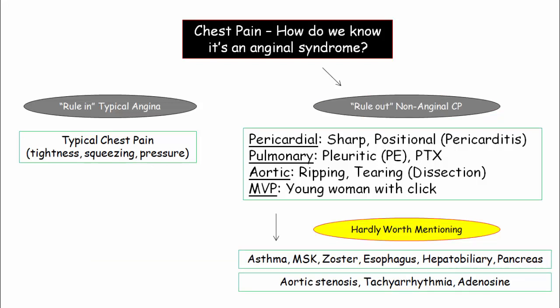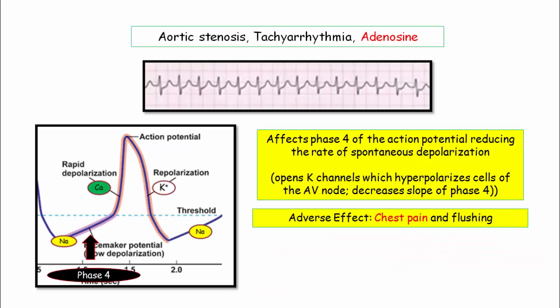For completeness, other chest pain scenarios used by the writers include: the asthmatic patient, who will generally be young and wheezing; musculoskeletal pain such as costochondritis; diseases of the esophagus such as GERD and esophageal spasm, which quickly differentiate into GI symptomatology; hepatobiliary and pancreatic disorders; and aortic stenosis, which has other derivatives to test. SVT or tachyarrhythmias such as fast AFib can present with demand ischemia and chest pain, but these scenarios will be obvious.